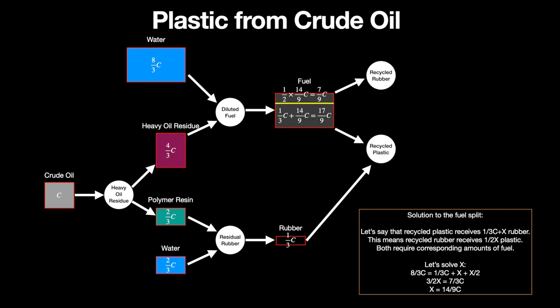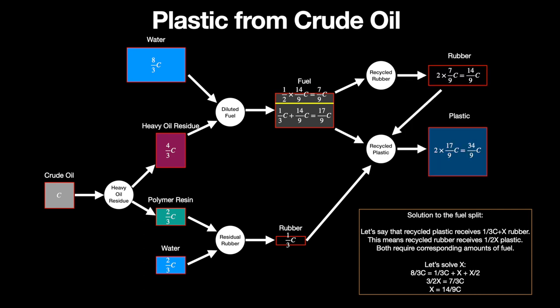Thus we send half of 14/9 C fuel, which is 7/9 C, to recycled rubber, and 1/3 C plus 14/9 C fuel, which is 17/9 C, to recycled plastic. Recycled rubber produces 14/9 C rubber, which together with the 1/3 C from residual rubber is exactly what the recycled plastic requires for 34/9 C plastic. 7/9 C is sent back to the recycled rubber, and 27/9 C, or 3 C, is left over. This means that this setup also produces three plastic for each crude oil sent in.